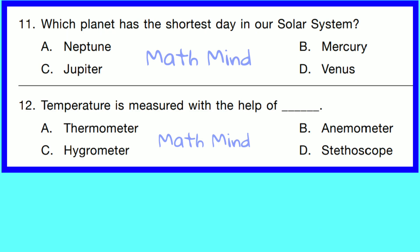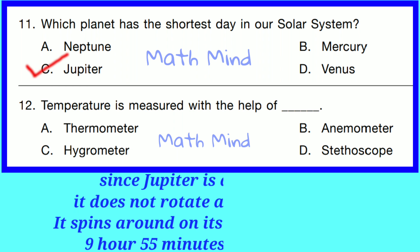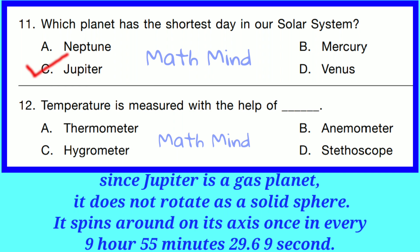Question No. 11. Which planet has the shortest day in our solar system? Option C is correct — Jupiter. Since Jupiter is a gas planet, it does not rotate as a solid sphere. It spins around on its axis once in every 9 hours 55 minutes 29.69 seconds.